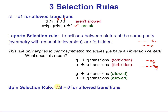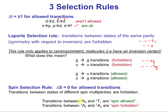The third selection rule is that a change in S — the spin value — must be zero for allowed transitions. This is why multiplicity has to stay the same. You can't go from one unpaired electron to two or three; you must keep the same number of unpaired electrons to satisfy the spin selection rule. A transition between a quartet A2 state and a quartet T1 is spin allowed, but going from a quartet A2 to a doublet A2 is spin forbidden.